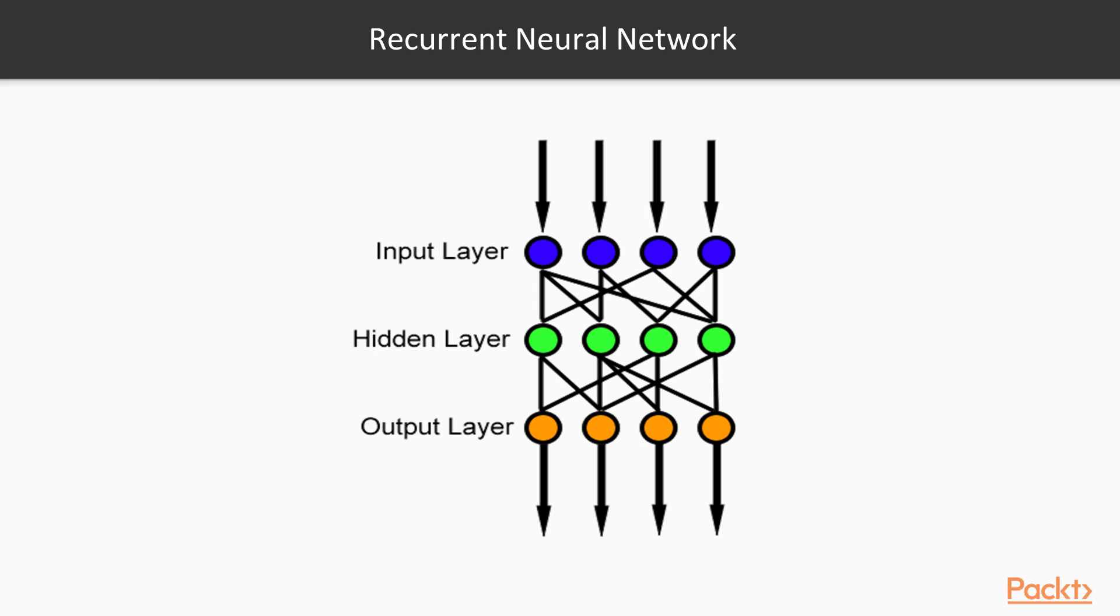So, the state vector at the end of inputting, for instance a full sentence, is a representation of that sentence, taking into account the order of input. This can then be used for various tasks, such as translating that sentence to another language.